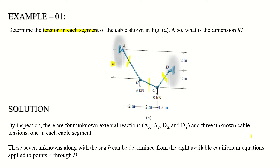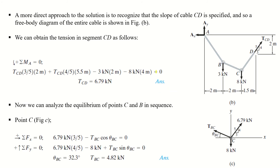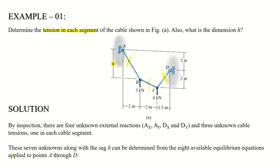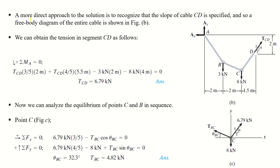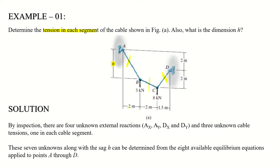By inspection there are four unknown external reactions (Ax, Ay, Dx, Dy) and three unknown cable tensions, one per segment. These seven unknowns along with sag h can be determined from eight available equilibrium equations applied at points A through D. However, a more direct approach is to recognize that the slope of segment CD is specified, so we start with a free body diagram of the entire cable.